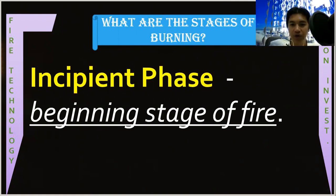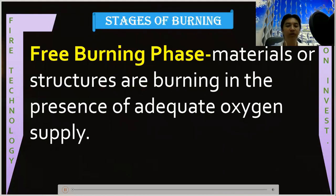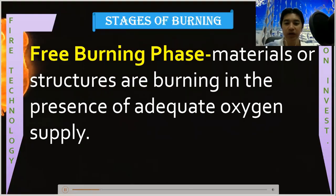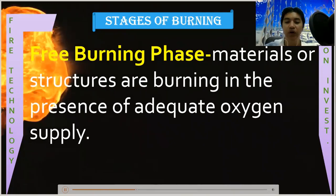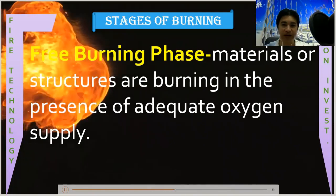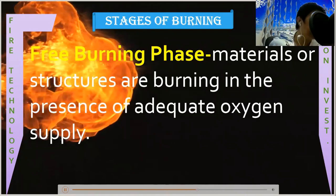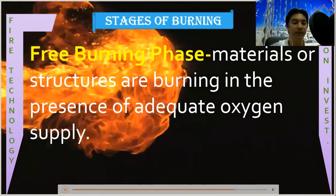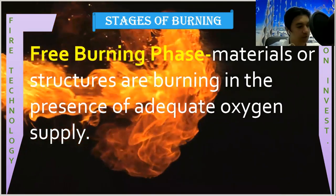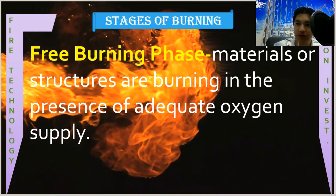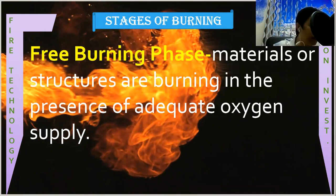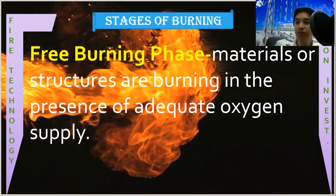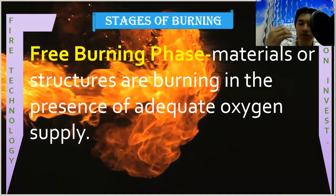Another stage of burning is the free burning phase — materials or structures are burning in the presence of an adequate oxygen supply. Its characteristics: fire has involved more fuel, oxygen supply is depleted, heat accumulates at the upper area, and temperature exceeds that of the incipient stage — from 1000 degrees Fahrenheit, it becomes 1300 degrees Fahrenheit.